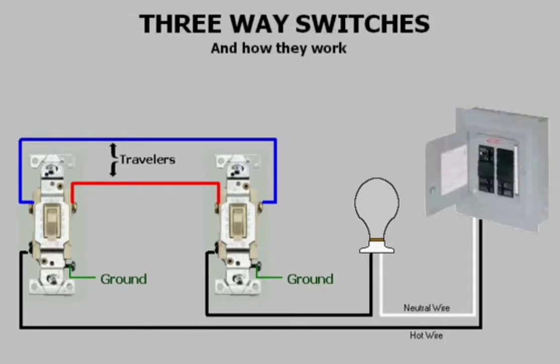Three-way switches are used when two switches are needed to control a light or lights. They are usually found at the two ends of a hallway or a stairway.